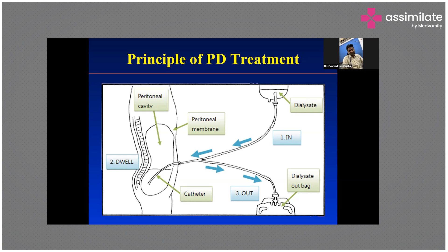This exchange ensures dialysis has been completed. However, doing it just once is not enough — in the past this was done three to four exchanges. There are three daytime exchanges and one nocturnal dwell. Around 10 PM we pour the fluid and the next morning we remove it — that is called nocturnal dwelling.